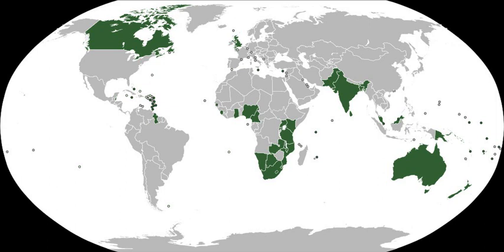Many Commonwealth nations possess traditions and customs that are elements of a shared Commonwealth culture. Examples include common sports such as cricket and rugby, driving on the left, the Westminster system of parliamentary democracy, common law, widespread use of the English language, designation of English as an official language, military and naval ranks, and the use of British rather than American spelling conventions.